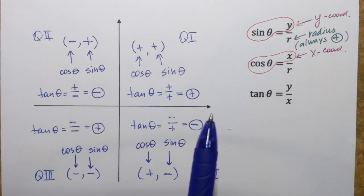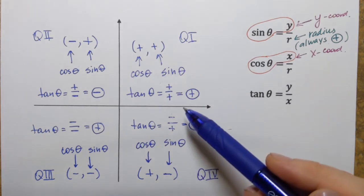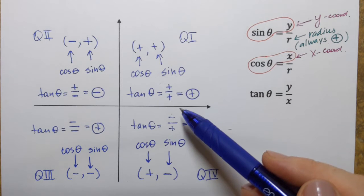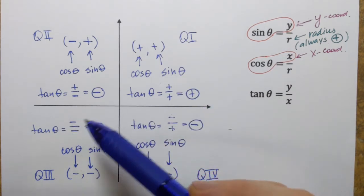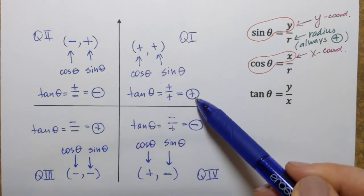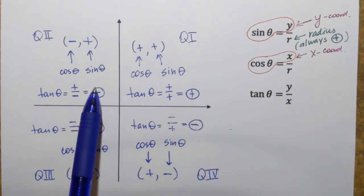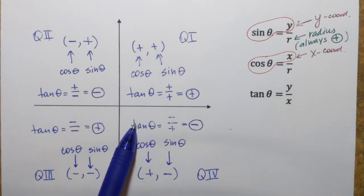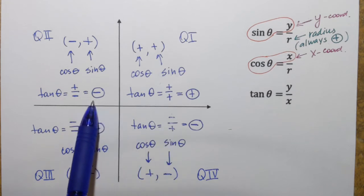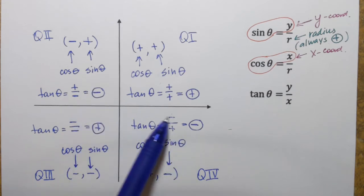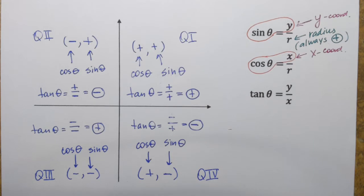We can see a pattern: in the quadrants where signs for both coordinates are the same — both positive or both negative — tangent is positive. In quadrants 2 and 4, where x and y coordinates have different signs, tangent is negative. So those are the signs for the three major trig functions: sine, cosine, and tangent, depending on where the angle terminates.